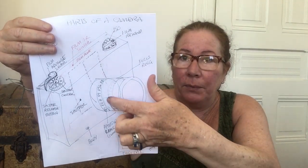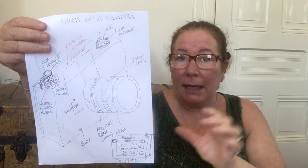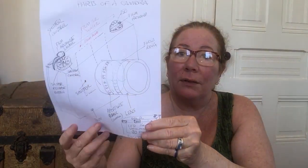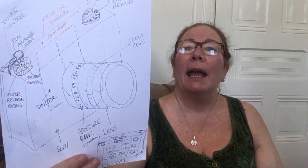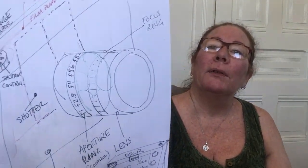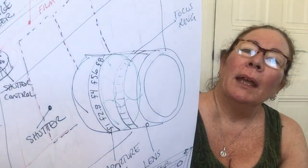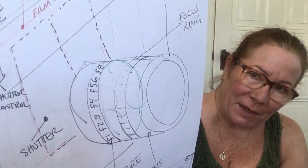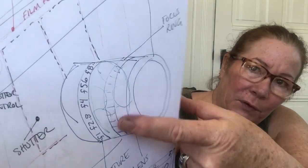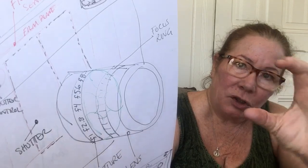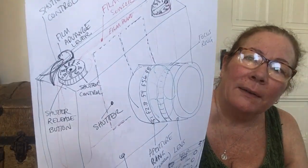The other little ring on the lens is called the focus ring — that's the one where you see people turning back and forth on the camera to focus. I drew a lens and an aperture ring with some F-numbers on it, and then the focus ring right there, which you would change to make sure that whatever you're photographing is in sharp focus.